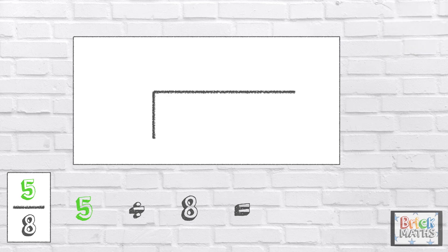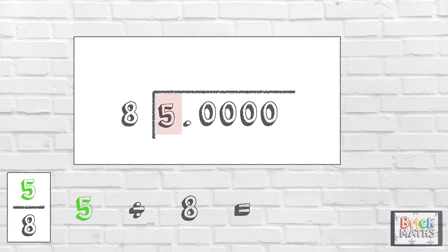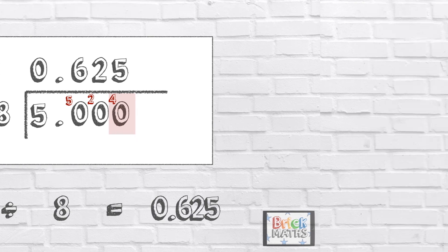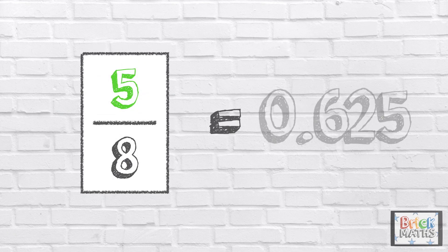Let's see if you got it right. So the number being divided is 5, so 5 is the dividend. And we're dividing the number by 8, so 8 is the divisor. We need our decimal point and some zeros as placeholders. 8 doesn't go into 5, so we have 0 with 5 left over. Make sure the decimal point is lined up in the same place. 8 times 6 is 48, so 8 goes into 50 6 times with 2 left over. 8 times 2 is 16, so 8 goes into 20 2 times with 4 left over. And 8 goes into 40 5 times with no remainders. So 5 eighths is equal to 0.625.